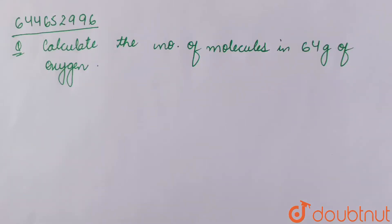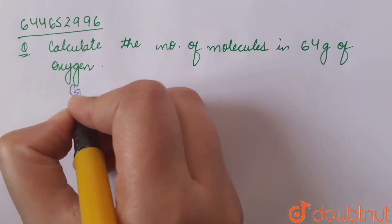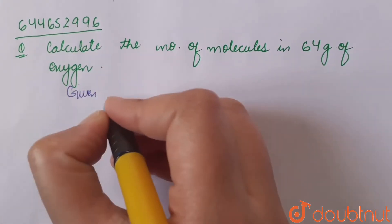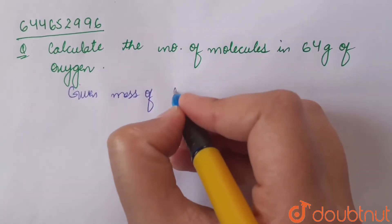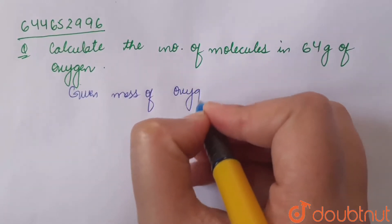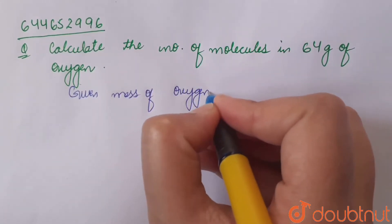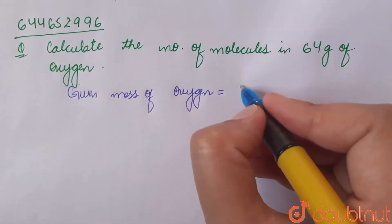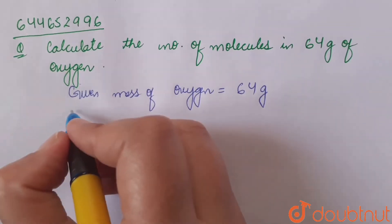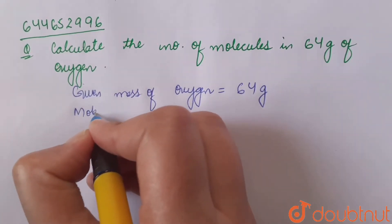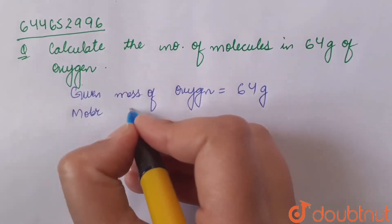The question says: calculate the number of molecules in 64 grams of oxygen. The given mass of oxygen equals 64 grams.